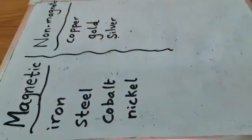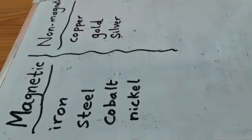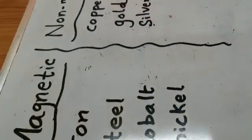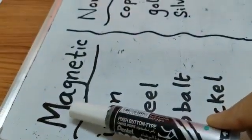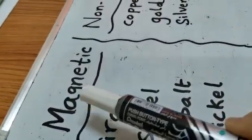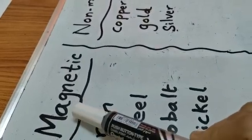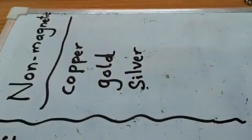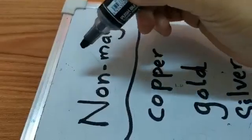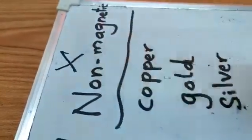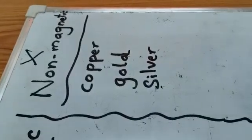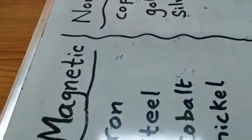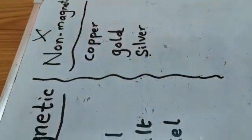Hi children, now we are going to discuss magnetic and non-magnetic materials. Magnetic materials means the materials that can be attracted with the magnet, or the materials that pull towards the magnet. Non-magnetic materials means they are not attracting with the magnet, or they are pushing away from the magnet — they cannot be attracted with the magnet.